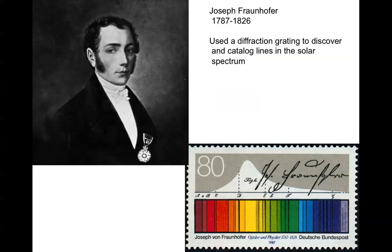The discovery of these lines in the spectra dates back to the early 19th century, where a Bavarian optician, Josef Fraunhofer, used a diffraction grating to discover and catalog lines in the solar spectrum. You see a picture of Fraunhofer on the upper left and a commemorative stamp showing the spectrum that he observed. The continuous spectrum is shown graphically on the top, and then this solar spectrum with the lines in it.